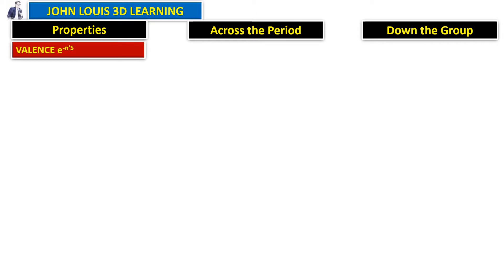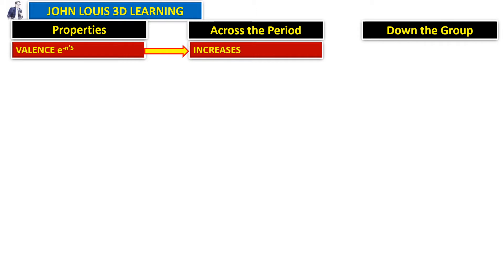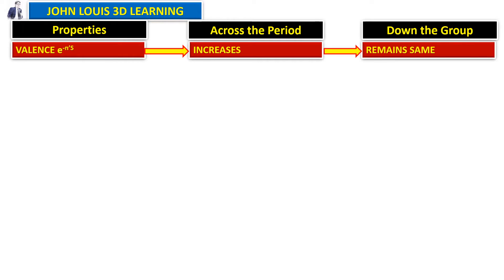So the first property is valency electrons. What happens when we move across the period — it goes on increasing. Down the group, it remains the same.